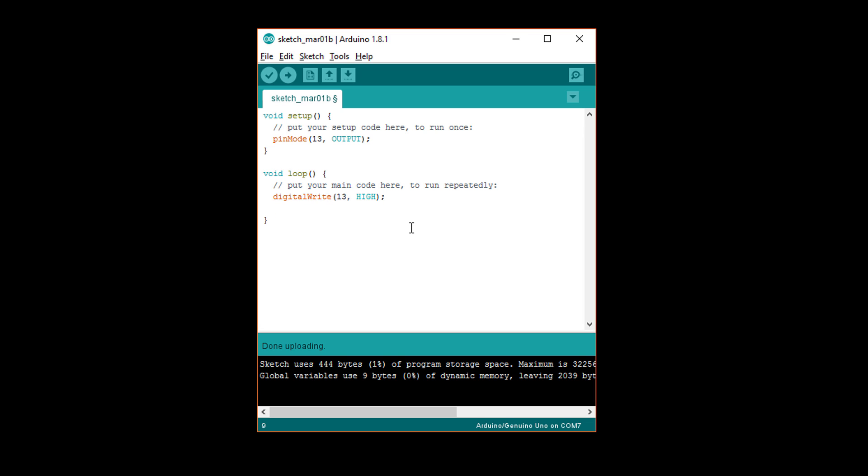Then, we want to wait, so write delay, open parentheses, 500, close parentheses, semicolon. This tells the processor to do nothing for 500 milliseconds, which is the same as wait from our pseudocode.